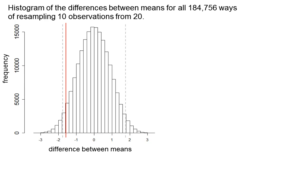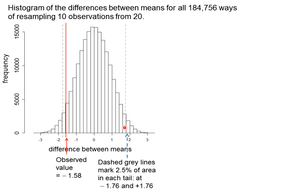So, having measured the difference between means for all of the 184,756 ways of selecting 10 observations from 20, we can plot those differences as a histogram, and this is it. The observed difference between means was minus 1.58, which is marked by that vertical red line. The dashed grey lines mark off 2.5% of the area under the distribution in each tail. They're at minus 1.76 and at plus 1.76 because of the symmetry of the distribution and the fact that its mean is zero. In fact, the distribution doesn't look quite symmetrical, but that's just an artifact of where the bin boundaries fall, just as in the last case, it's an exactly symmetrical distribution.